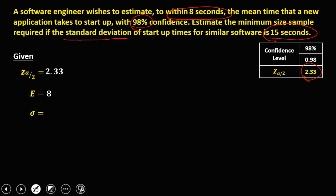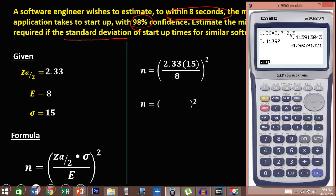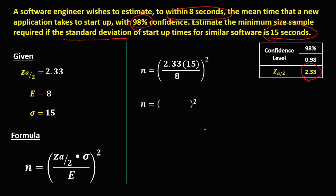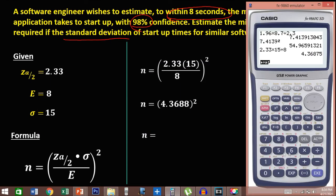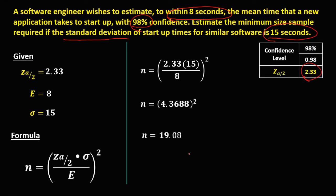To solve for the sample size, it's the square of the confidence coefficient 2.33, times the population standard deviation 15, divided by the margin of error 8. So we have 2.33 times 15, then divide by 8, giving 4.3688. Then to solve for the sample size, take the square: 4.3688 squared gives 19.08. Since sample size always rounds up, the final answer is 20. So 20 is the sample size.